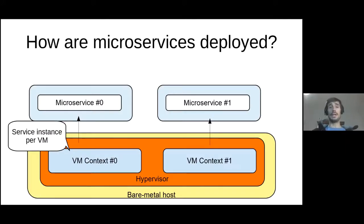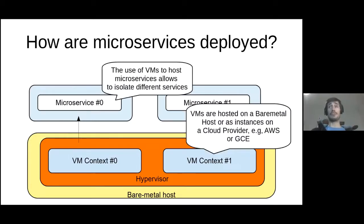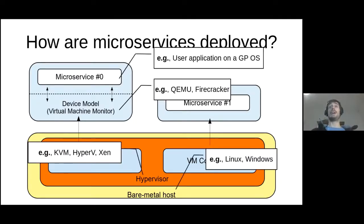One possible way to deploy microservices is by using virtual machines. This pattern is called service instance per VM. The deployment of microservices as virtual machines has mainly two benefits. First, it allows to isolate microservices, meaning they can't interfere with each other. Second, you can leverage cloud infrastructure like Amazon Web Services or Google Cloud Engine.